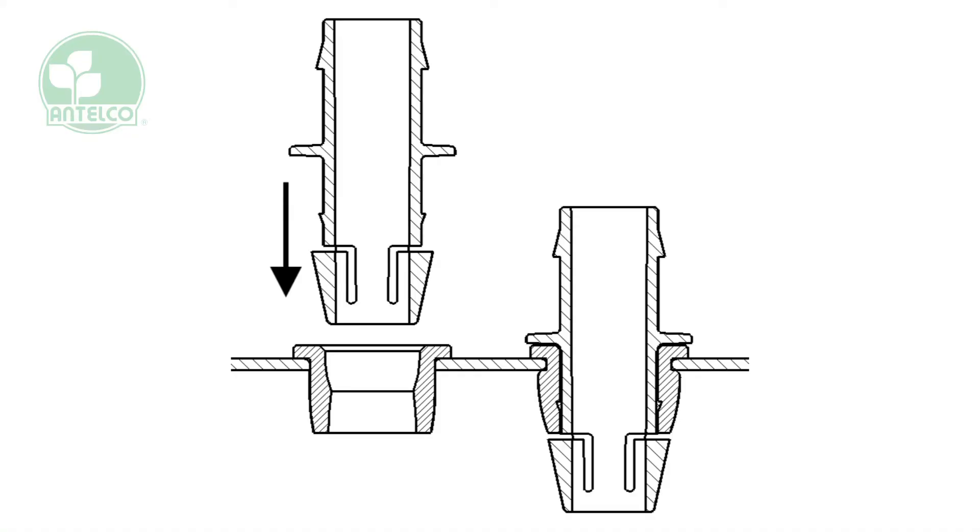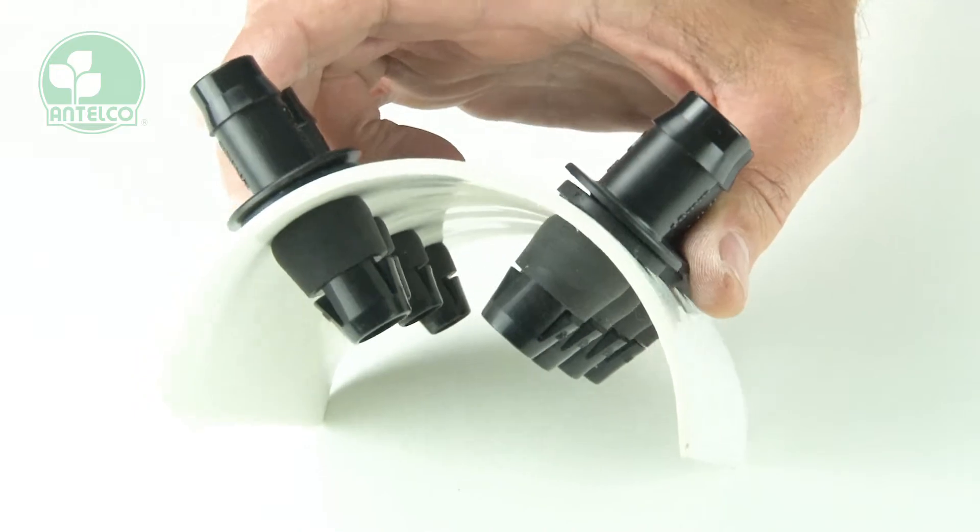The Kapo grommet has an internal step that engages with the Xpando take-off when installed, pushing outwards to provide a positive engagement with the inner surface of your pipe.